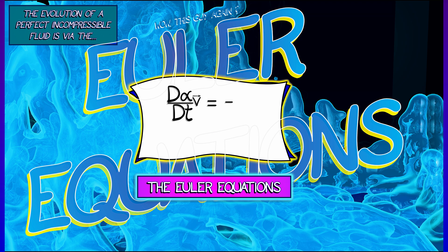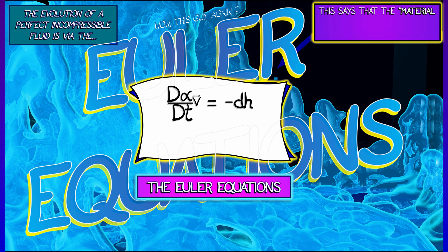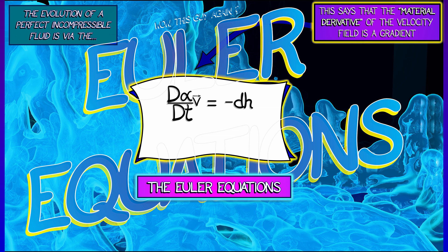They are d alpha v dt, the material derivative of the velocity one form field is minus dh, where h is just some function. Now, what this says is that the material derivative of the velocity field is a gradient. A gradient of what? We'll talk about that later.